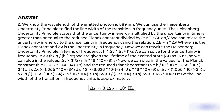Δν ≥ ℏ/2 / (h · 16 × 10⁻⁹ s). Plugging in h = 6.626 × 10⁻³⁴ J·s and ℏ = h/(2π) = 1.055 × 10⁻³⁴ J·s, we get: Δν ≥ (1.055 × 10⁻³⁴ J·s) / (2 · 6.626 × 10⁻³⁴ J·s · 16 × 10⁻⁹ s) = 1/(32 × 10⁻⁹ s), giving Δν ≥ 3.125 × 10⁷ Hz.